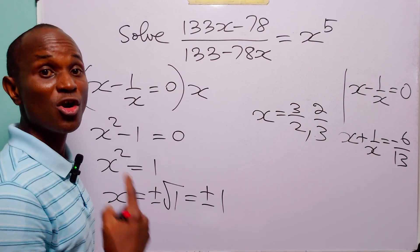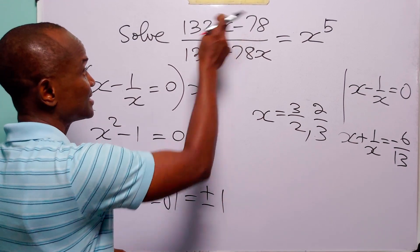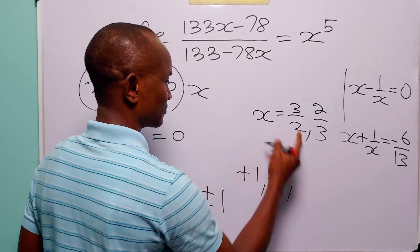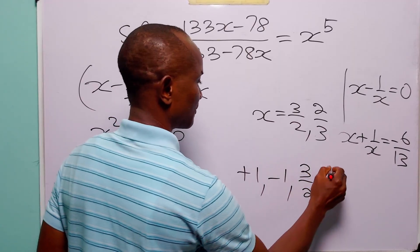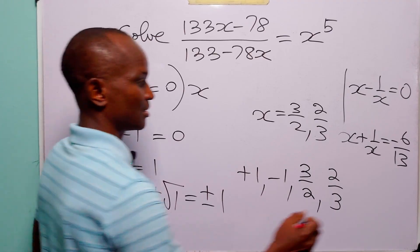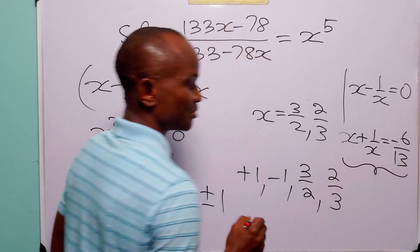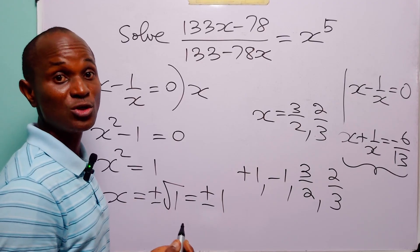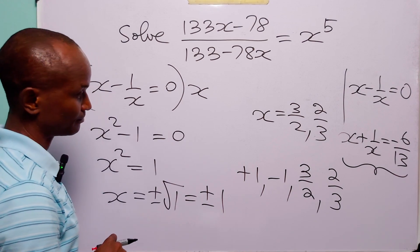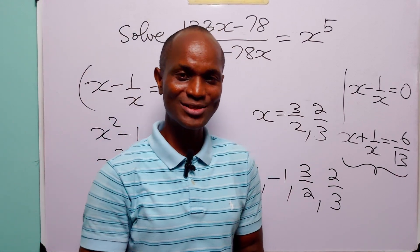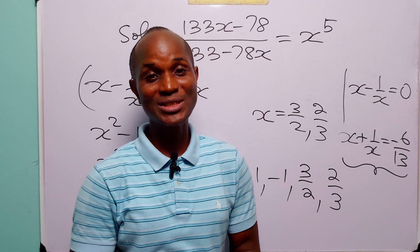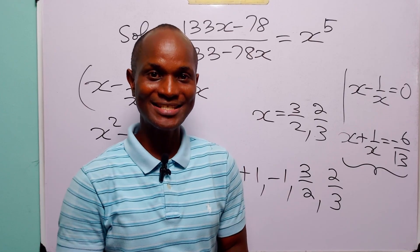So we have that the four real values of x that satisfy this equation are x equals 3/2, x equals 2/3, x equals 1, and x equals minus 1. With that, we come to the end of today's tutorial. I hope you learned something new. If you enjoy such content, please subscribe to the channel, leave us a like to support the channel. Thanks for watching and see you in the next video.